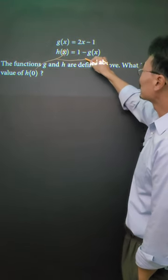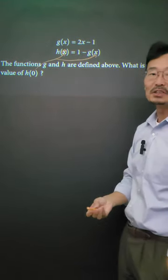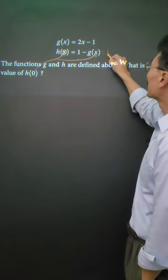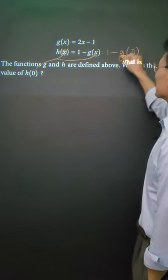Which means that the 0 gets plugged into the x of the same equation as well. So this will turn into 1 minus g of 0.